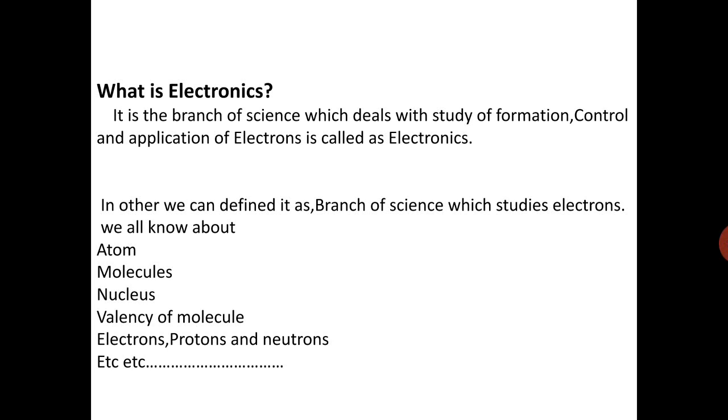Next is nucleus. Nucleus is the center or centric center of atoms. Valence of molecule means number of electrons present in outermost valence of molecule or atom. Last, electrons, protons and neutrons. These are the atoms or particles which are present in molecules or atoms. Electrons which is negatively charged, protons are positively charged, and neutrons which have no charge.